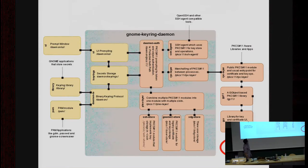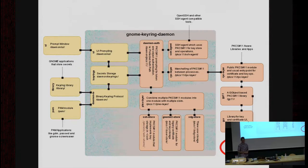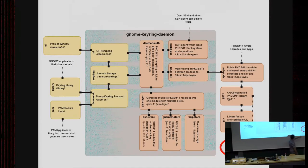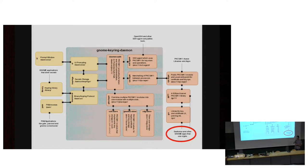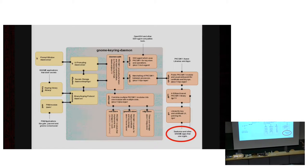This is a diagram of the GNOME keyring daemon from its documentation — I'm not even sure if it's still accurate. Seahorse is shown at the bottom as the user-visible part. Seahorse uses a library that has a GTK widget applications can use to show information for a certificate, like the ones used for a TLS website. Evolution uses that widget when showing certificate information.